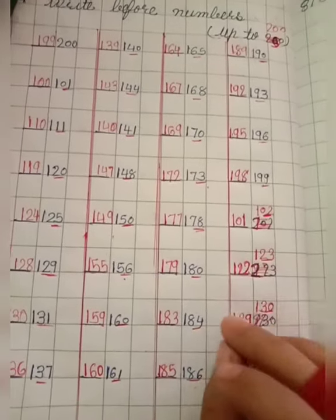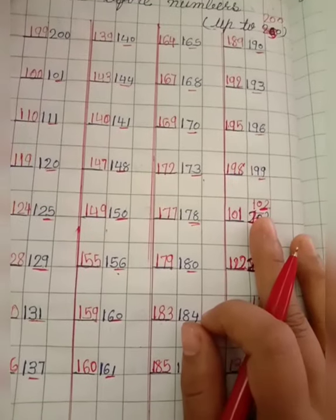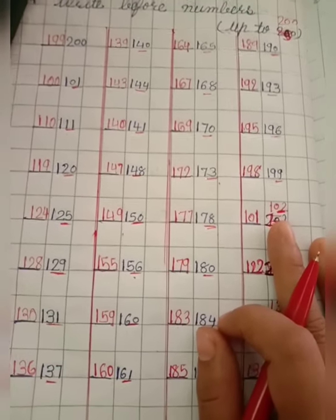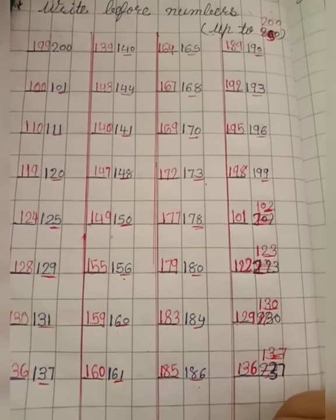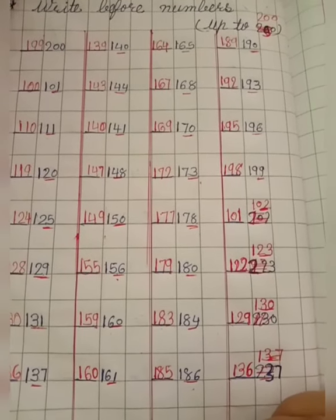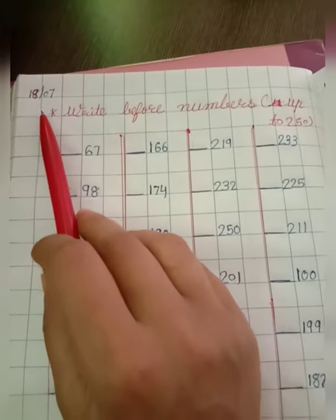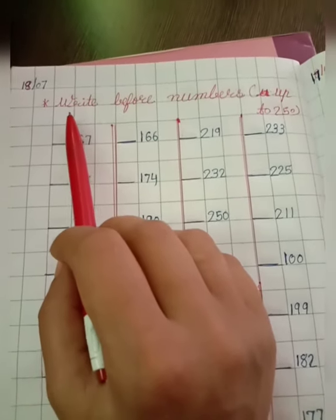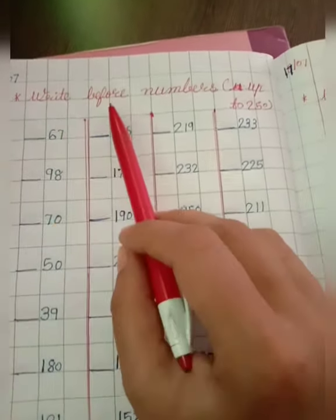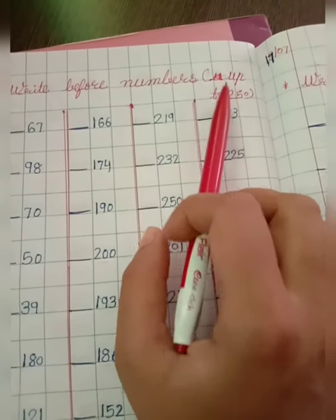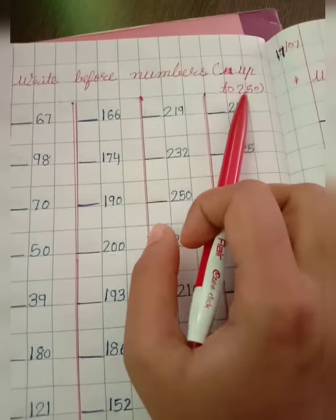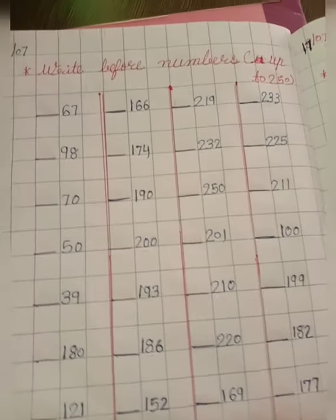Okay, if you have done something wrong, then correct it. Aur jin bachchon ne work nahi kiya hai, wo please work complete kijiye. Now, let's start our new work. Okay, first of all, you will write the date. Then you will write the instruction: Write before numbers up to 250. Okay, let's start today's work.